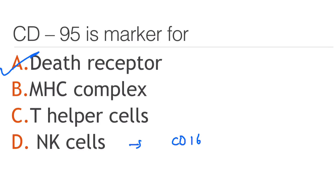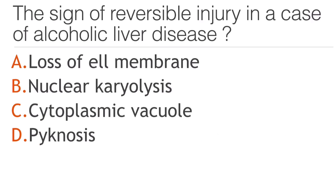For NK cells, the markers are CD16 and CD56. The sign of reversible injury in a case of alcoholic liver disease is: loss of cell membrane, nuclear karyolysis, cytoplasmic vacuolation, or pyknosis? The answer is cytoplasmic vacuolation — the others are signs of irreversible injury.